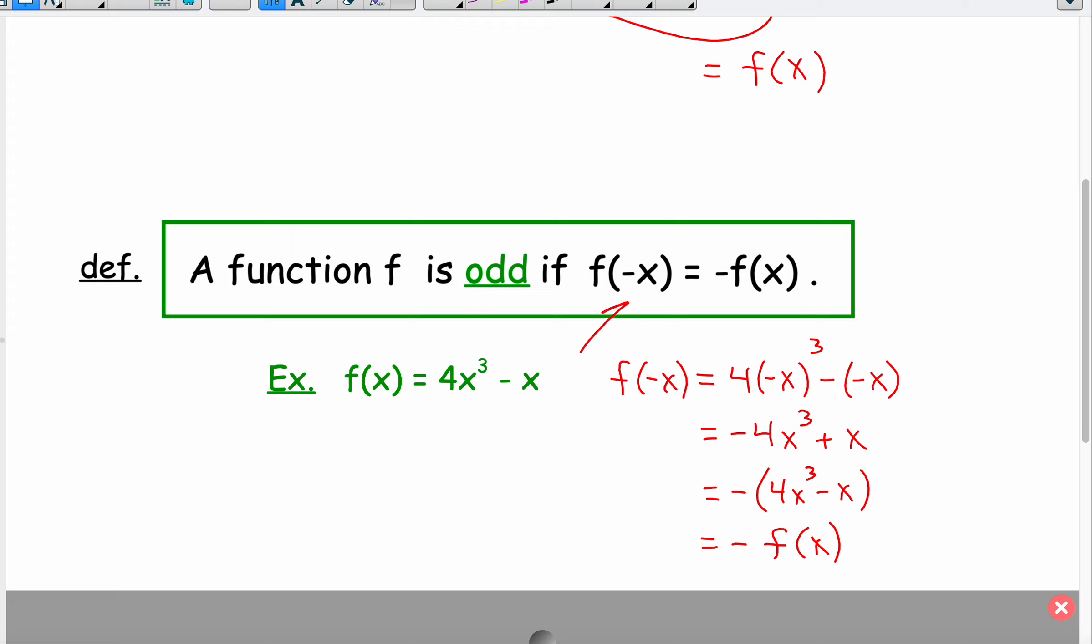And so therefore, f of negative x resulted in the complete opposite of the original function. So I have the complete opposite of my original function, 4x cubed minus x.